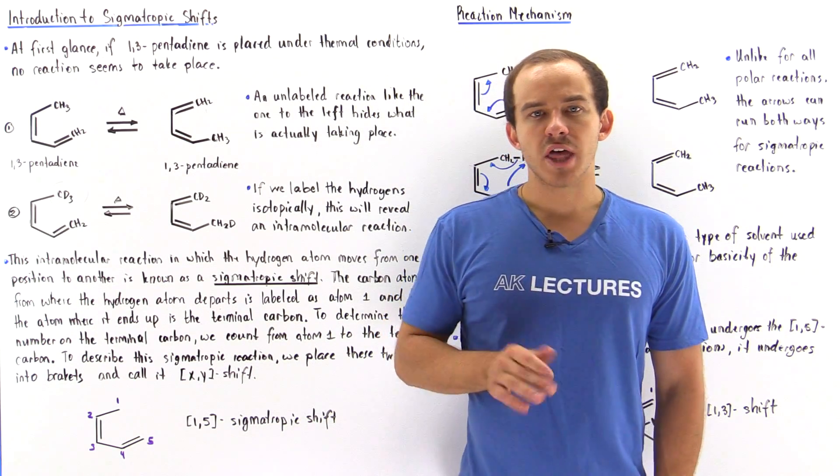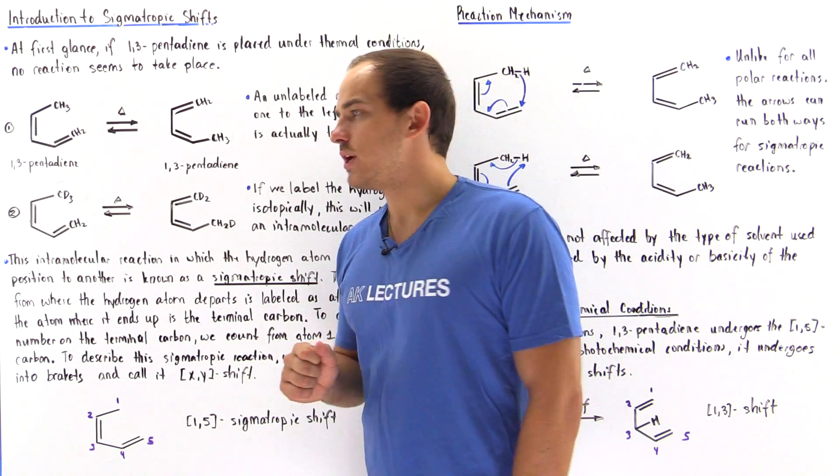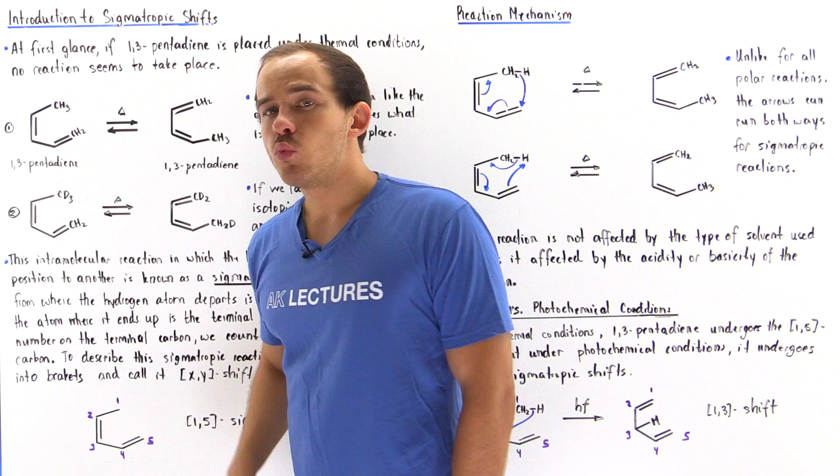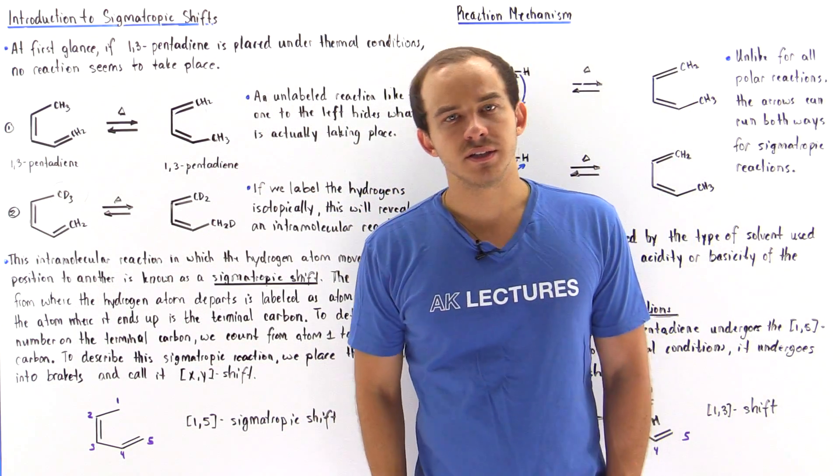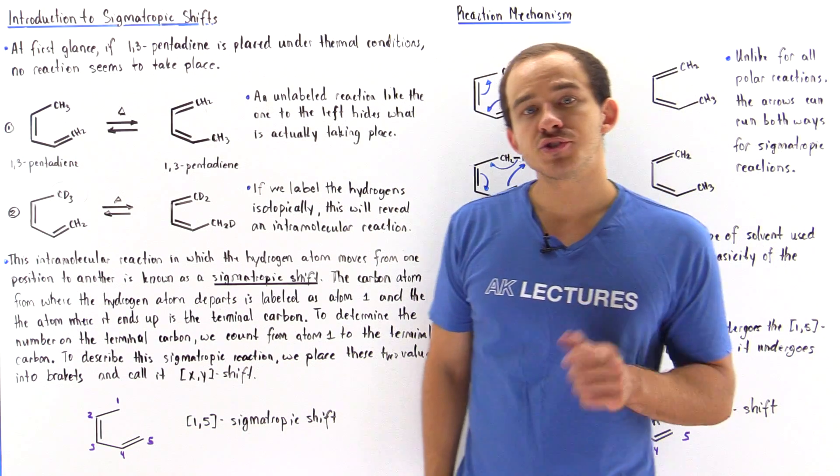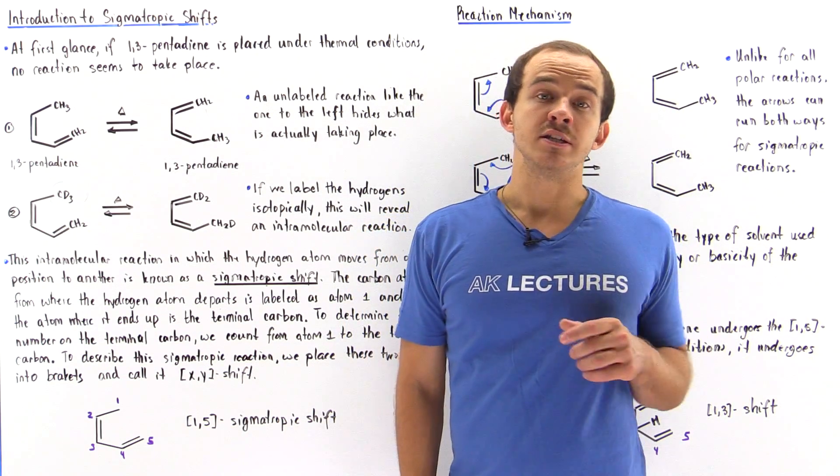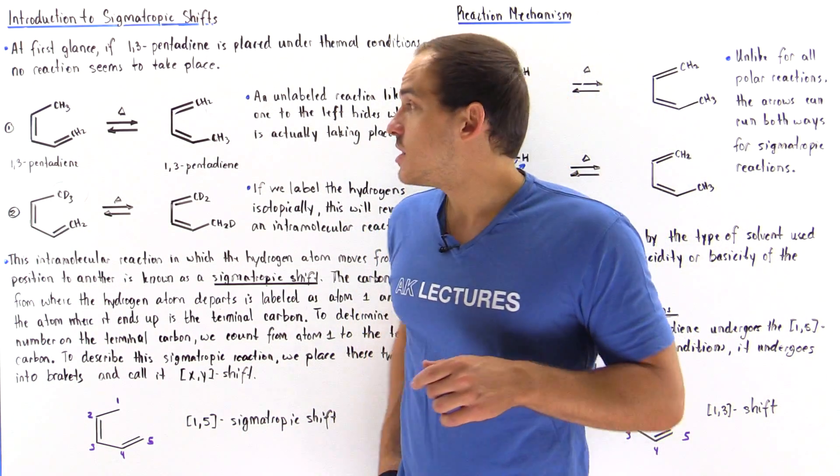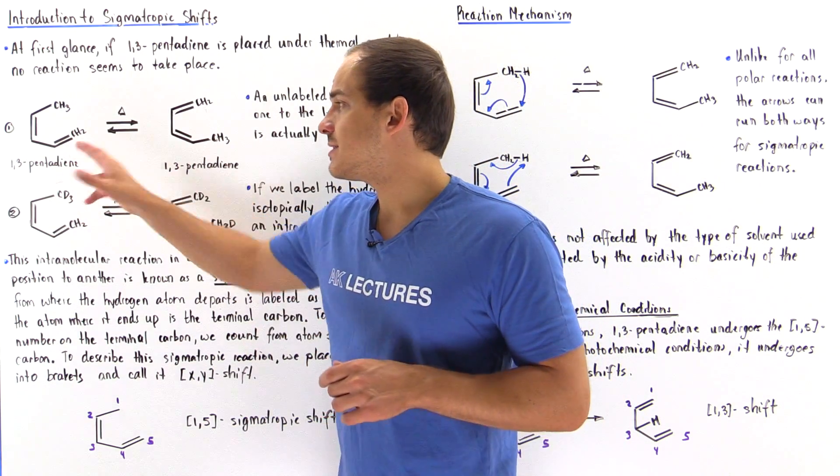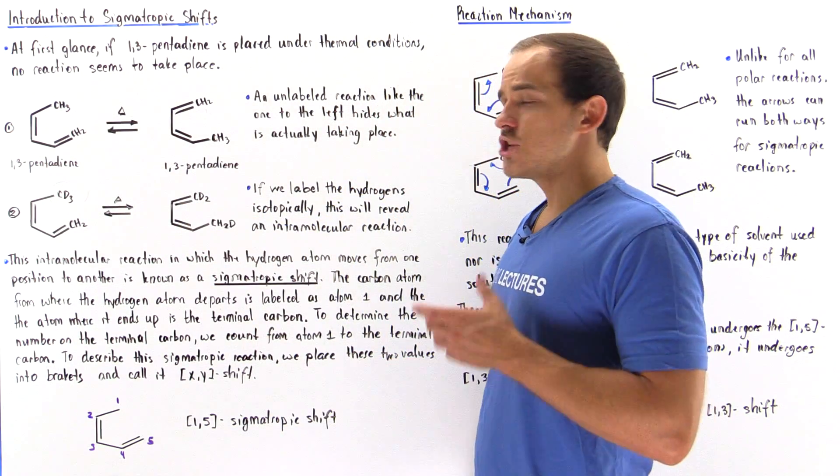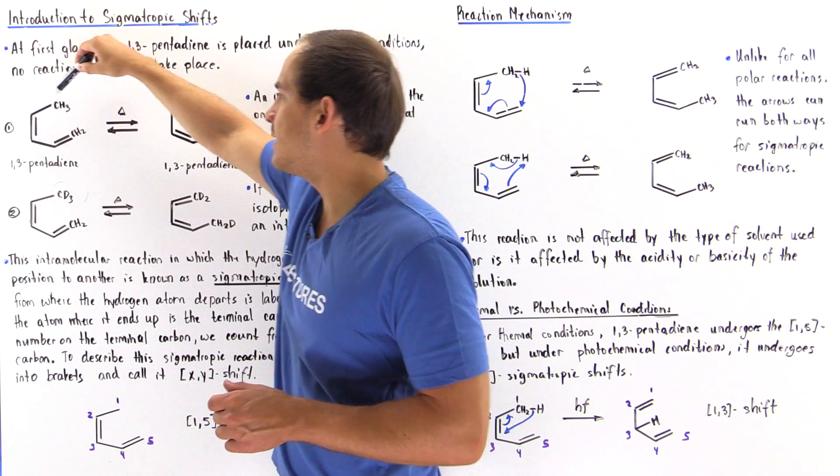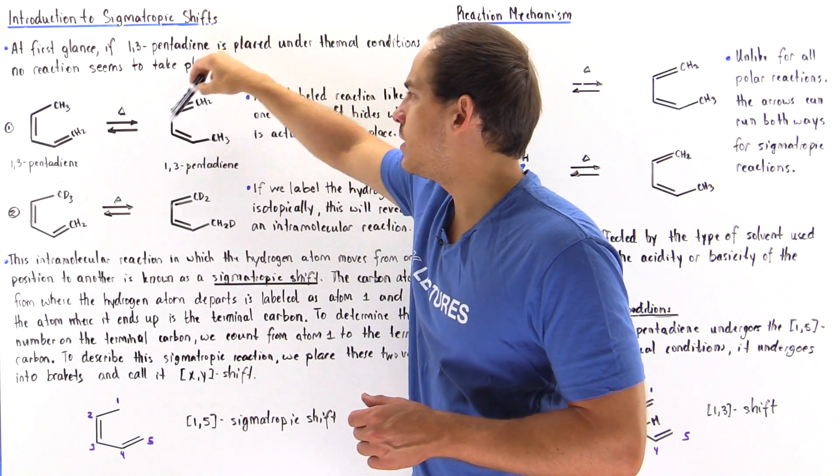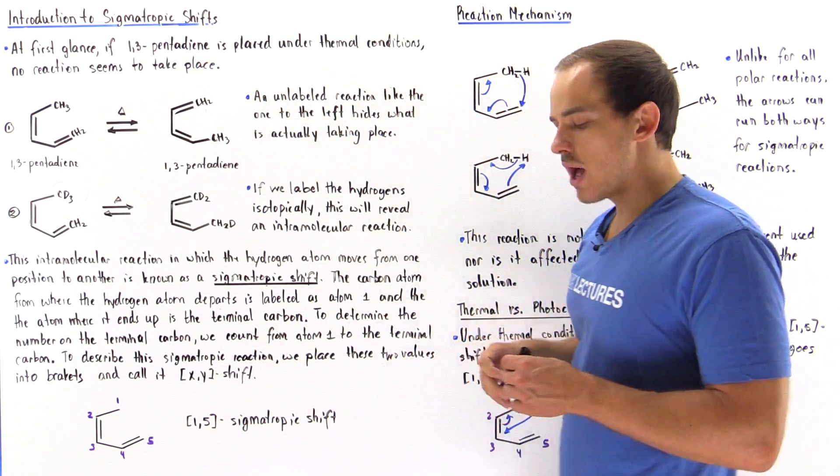And to see what we mean by that, let's take a look at the following molecules. So let's say we take 1,3-pentadiene as shown and we place it under thermal conditions. At first glance, no reaction actually seems to take place because the products that we form is exactly the same as the reactants that we begin with. So we begin with 1,3-pentadiene and we end up with 1,3-pentadiene as well.